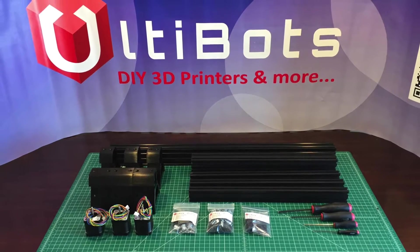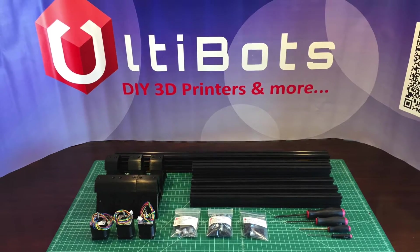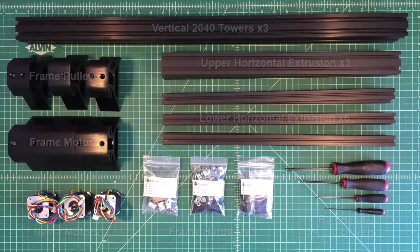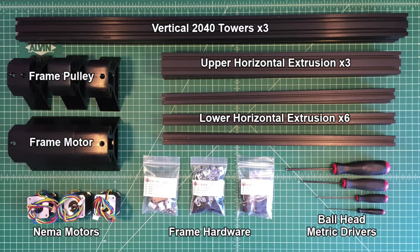In this video segment we're going to build the Ultibot's D300 frame assembly. You will need the following components for the frame assembly. Not shown is a 2.5mm L key.